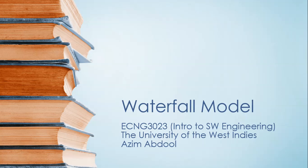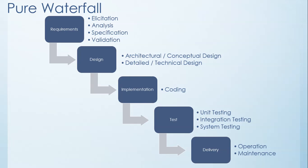In this model the project progresses through an orderly sequence of steps from the initial software concept through system testing. The project holds a review at the end of each phase to determine whether it is ready to advance to the next phase — for example, from requirements to design. If the review determines the project is not ready to move to the next phase, it stays in the current phase until ready.